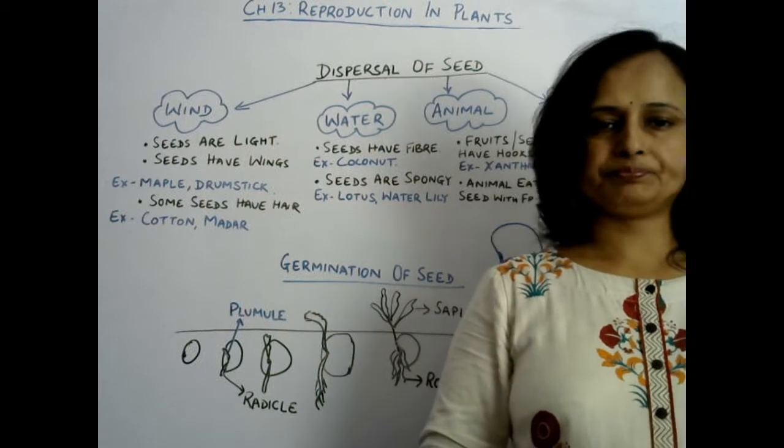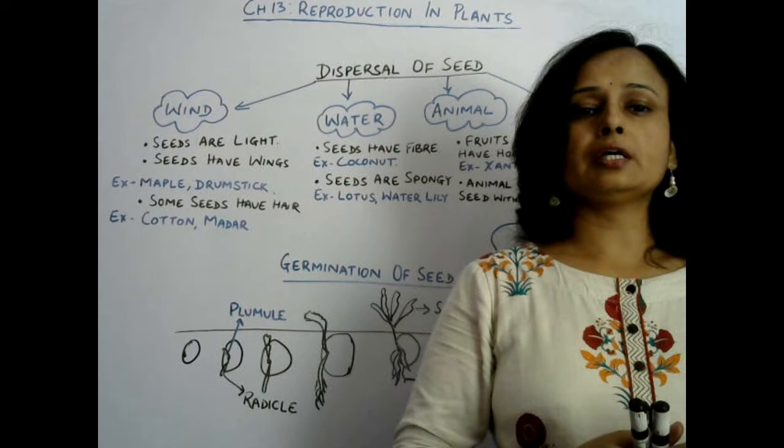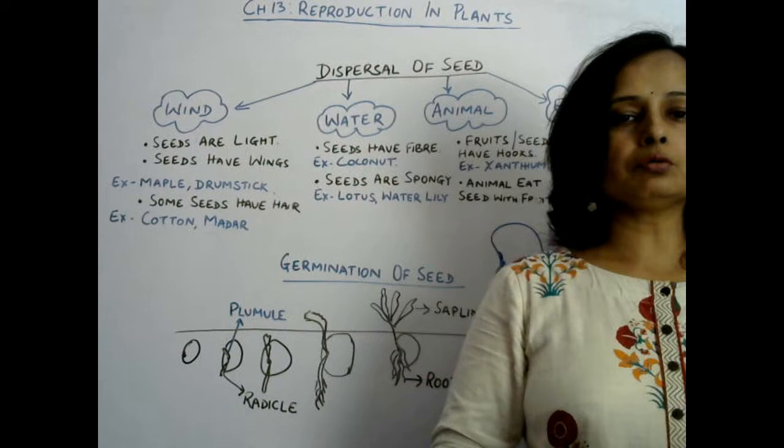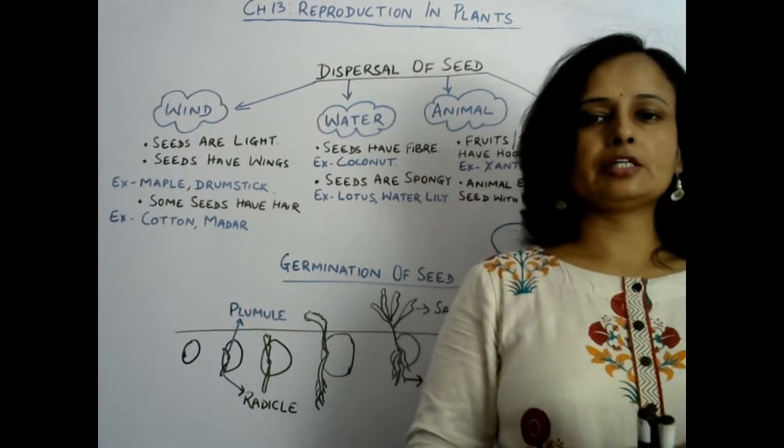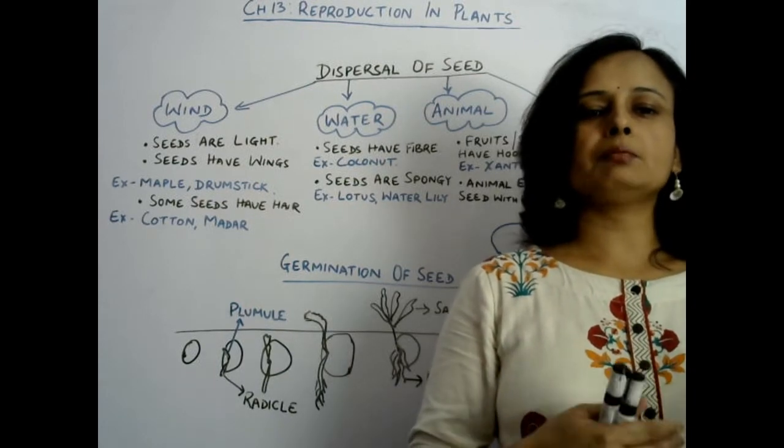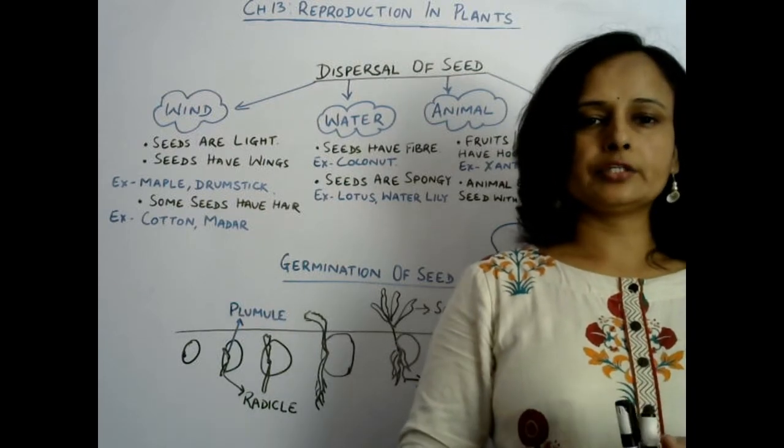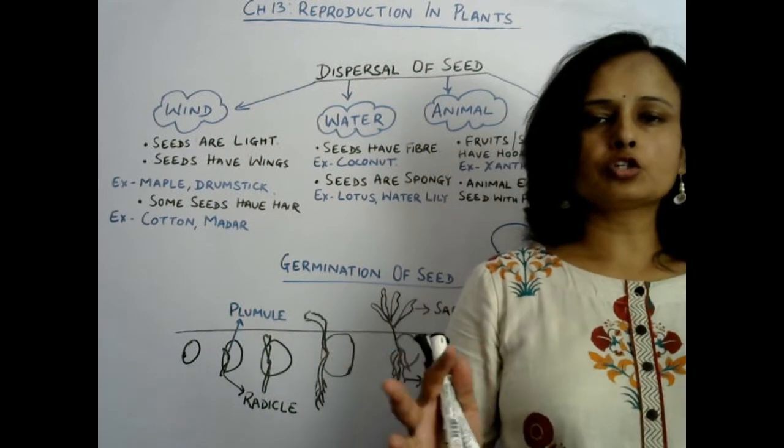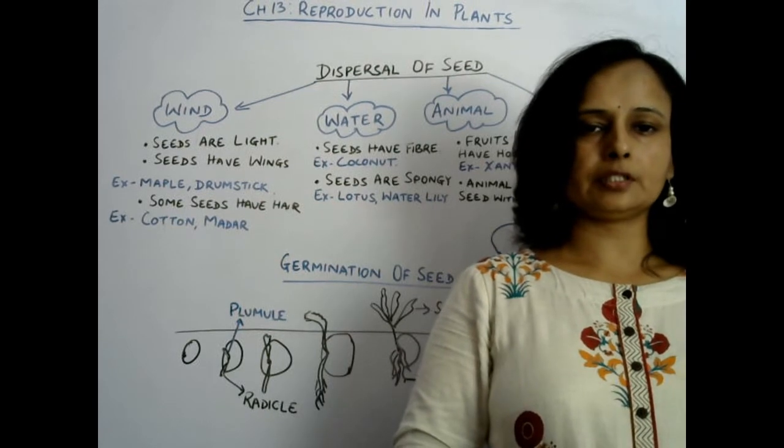Next, through water. The plants which grow nearby water sources can disperse their seeds through water. Normally the seeds have fibers. Because of fibers, they can easily float on water and seeds can be carried to different places along with the water current. Example is coconut. Coconut seed has lots of fibers so that it can easily float on water and move with water current.